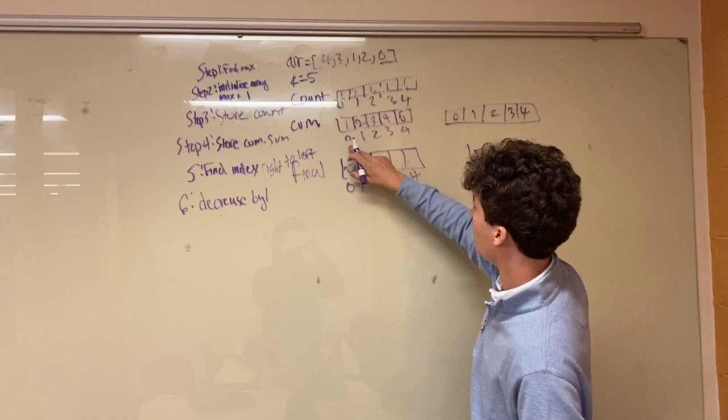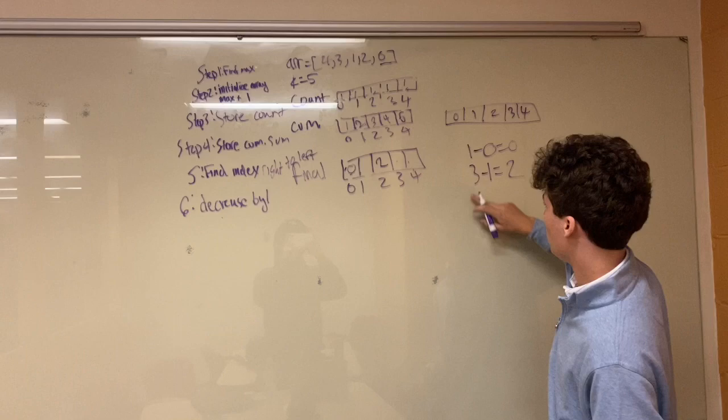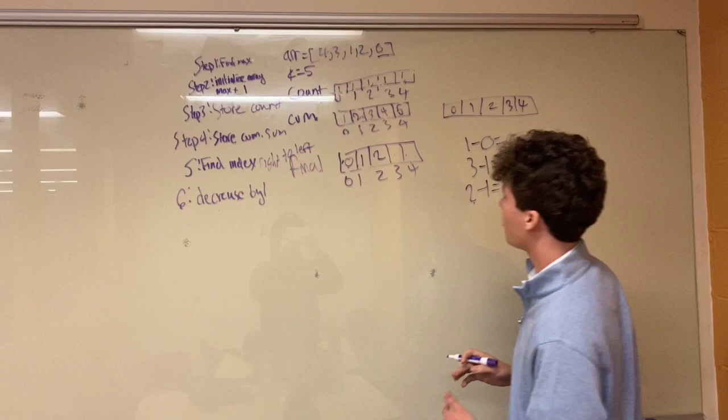Now we go 1 over. 1 equates to 2 in our cumulative sum. So we go 2 minus 1 equals 1. 1.